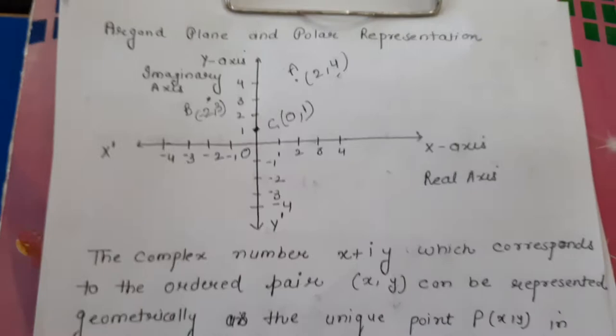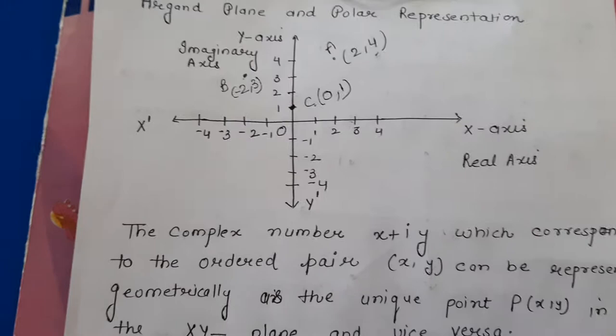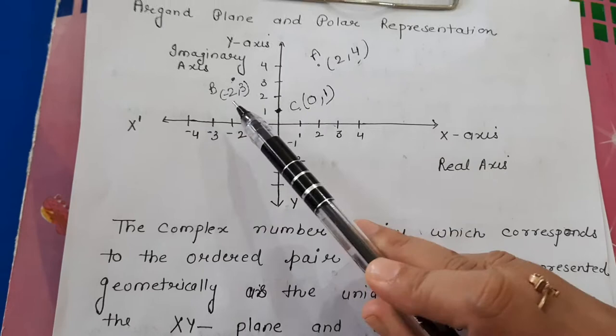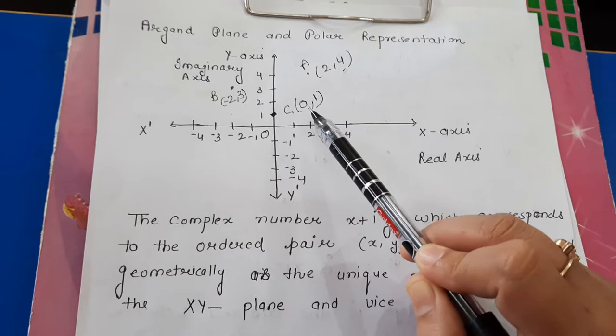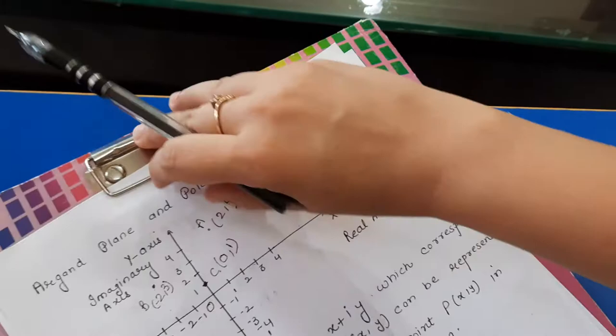This plane, called the Argand plane or complex plane, assigns a complex number to each of its ordered pairs. The ordered pair (2, 4) corresponds to 2 plus 4 iota; (-2, 3) represents -2 plus 3 iota; and (0, 1) corresponds to 0 plus iota.